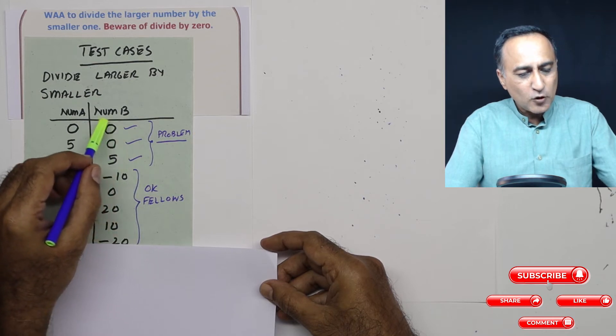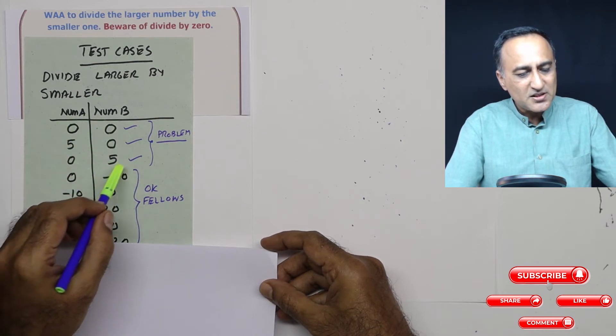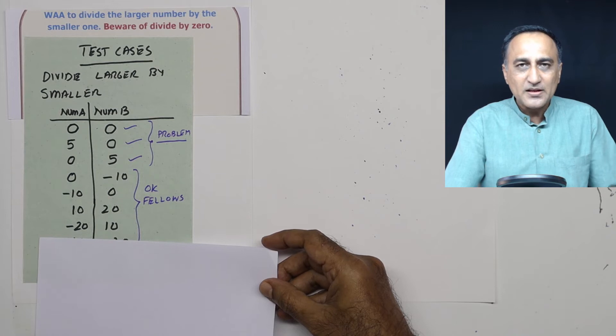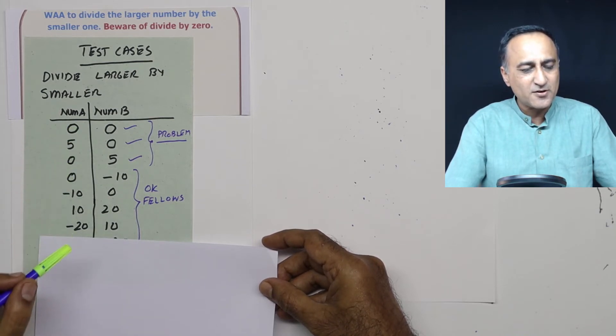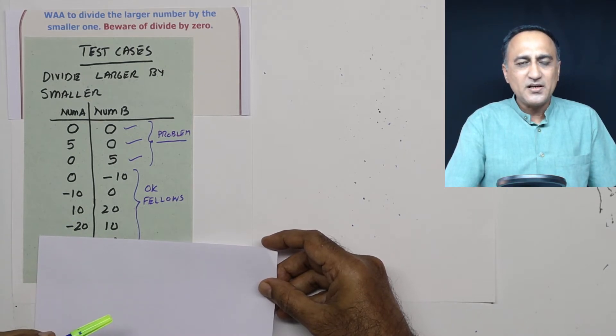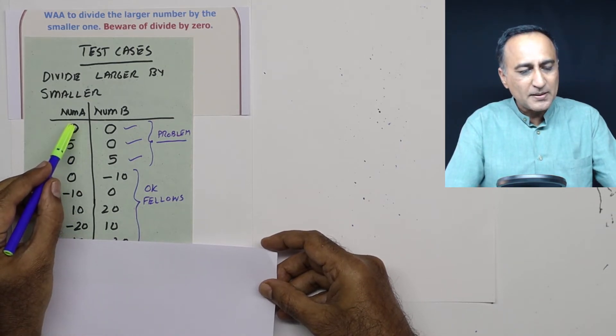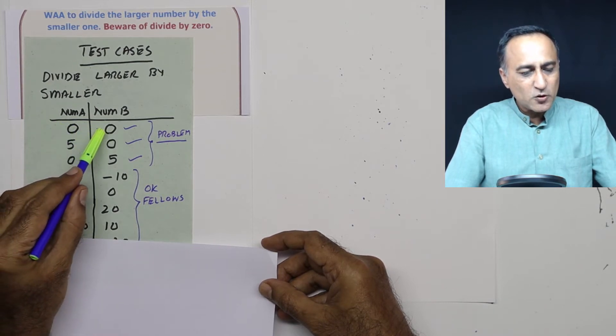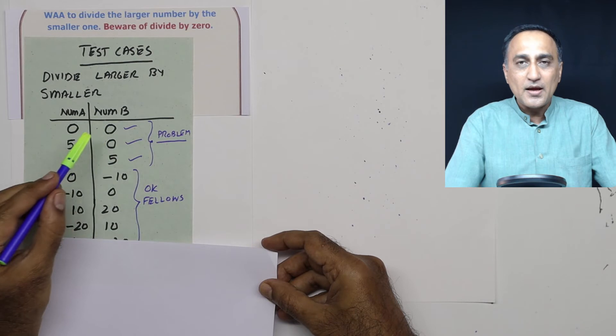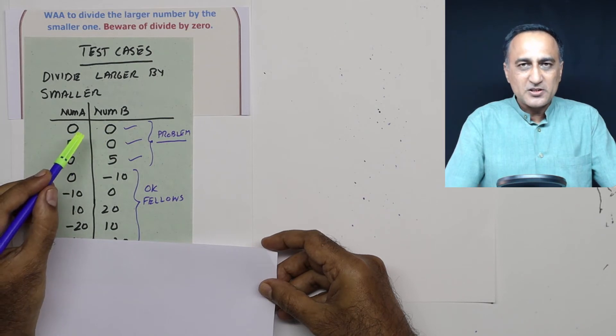So we need to take care of logic which deals with these first three fellows immediately. So we are going to use the if else if structure here. But it is very simple how we would write the logic. I am going to read number A, number B. If number A equal to 0 and number B equal to 0, I am going to say division by 0 and stop.